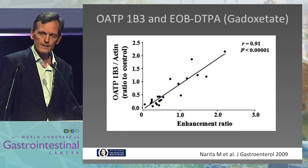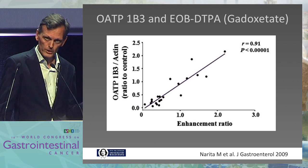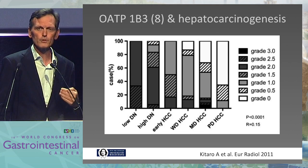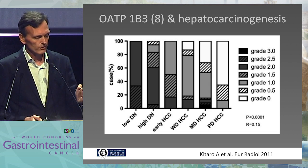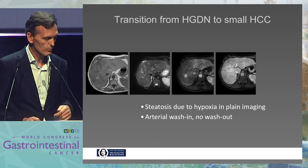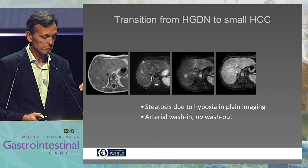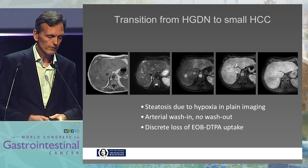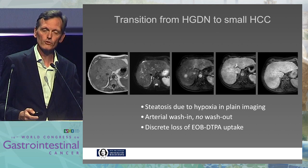I already mentioned OATP — the transport mechanism for uptake of gadozetate, the EOB-DTPA. There is a very strong correlation between the expression of OATP and gadozetate uptake, and also a very close correlation between OATP expression and hepatocarcinogenesis. From low-grade dysplastic nodule over high-grade dysplastic nodule to overt HCC, the expression of OATP goes down dramatically, and this is what we can see in the images. That lesion in segment five to six — a steatotic lesion, hyperperfused in the arterial images — doesn't have washout. In the hepatobiliary imaging, there is no uptake of gadozetate, indicating OATP expression is going down.